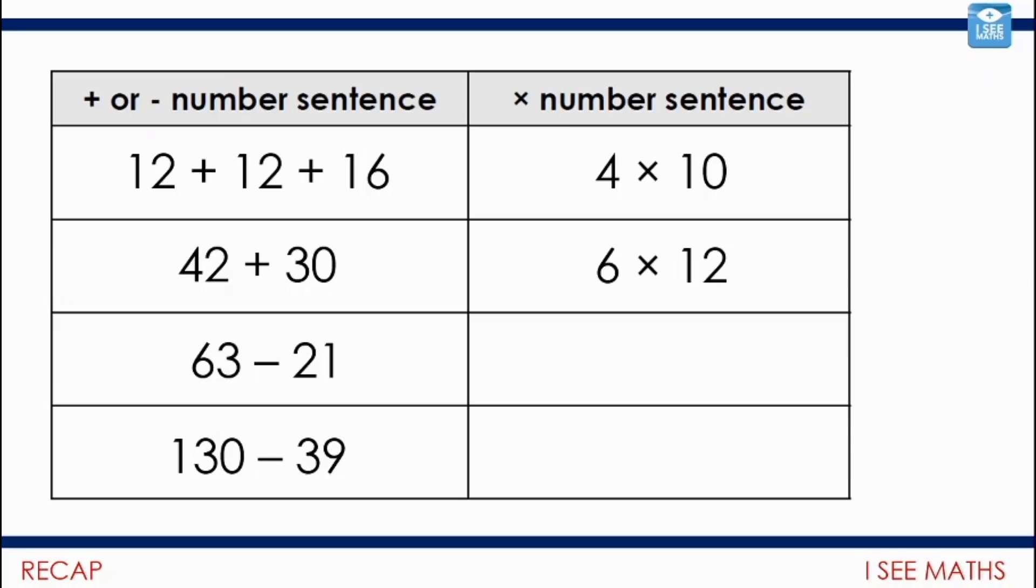63, subtract 21. Well, 63 and 21. A common factor is 7. 7 goes into 63 and 21. 7 nines are 63. But then I take away 3 of those lots of 7. So, in total, I'm left with 6 lots of 7.